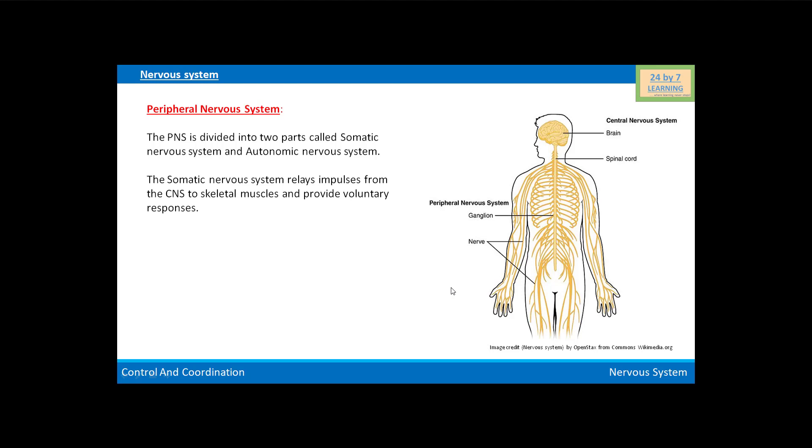The somatic nervous system relays impulses from the CNS, or central nervous system, to skeletal muscles and provides voluntary responses. You can see here this is the central nervous system: this is the brain, this is the spinal cord, and these are the skeletal muscles, these are ganglion, and these are nerves. Here is the peripheral nervous system.